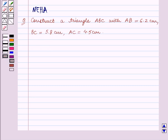So we have to construct a triangle in which the lengths of three sides, AB, BC and AC, are given. Let's start the solution now.